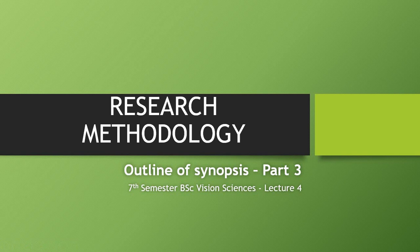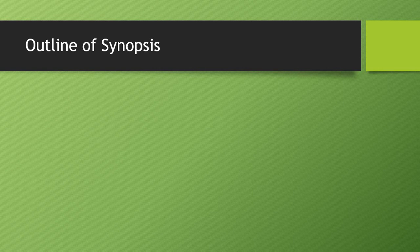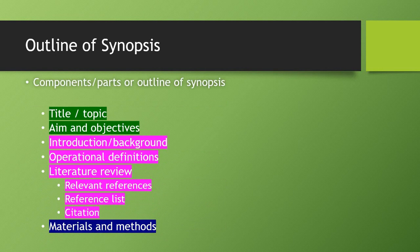Bismillahirrahmanirrahim, Assalamu Alaikum. This is the 7th semester BAS region sciences lecture. Today we are going to start research methodology — the outline of synopsis part 3. This is our fourth lecture. Before we start, let's revise our previous lectures. We covered the following components of synopsis: title and topic, how to select your title or topic for a research study, how to draw the aim, and how to break down your aim into objectives. Last time we had introduction or background of the disease, location, institution, methodology, and the area.